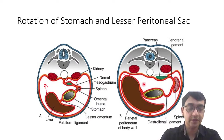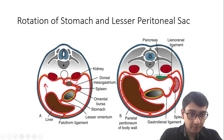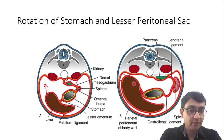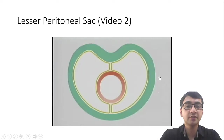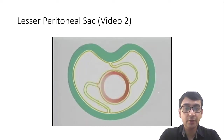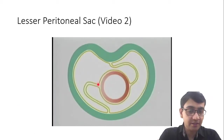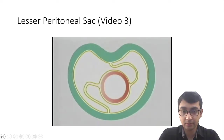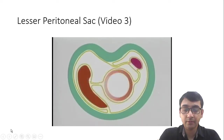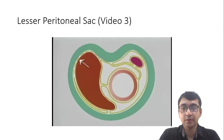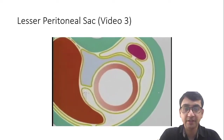The space now being formed is known as the lesser sac or omental bursa. It has the stomach and lesser omentum in front, the liver and inferior vena cava on the right side, the spleen with its ligaments — the gastrosplenic ligament and the splenorenal ligament — on the left side, and the posterior abdominal wall behind. This is how the stomach rotates and the lesser sac is formed. The line of fusion of the liver with the posterior wall is known as the bare area of the liver, and this shaded space is the lesser sac or omental bursa.